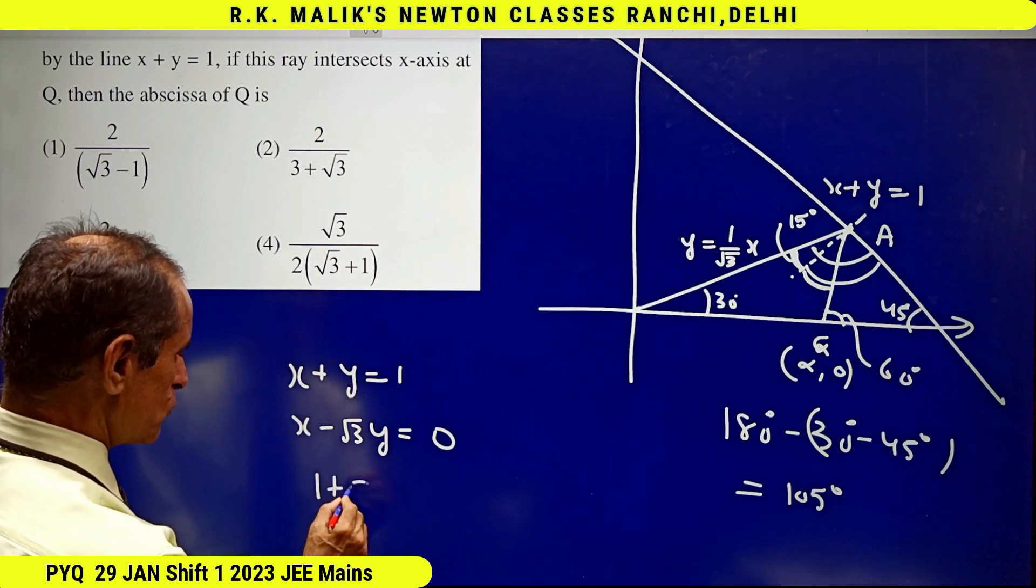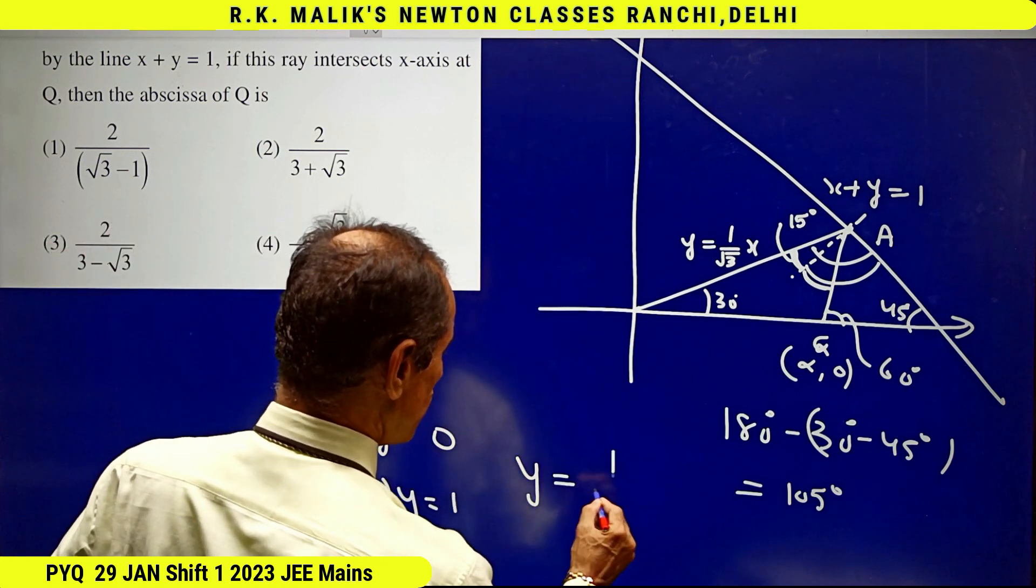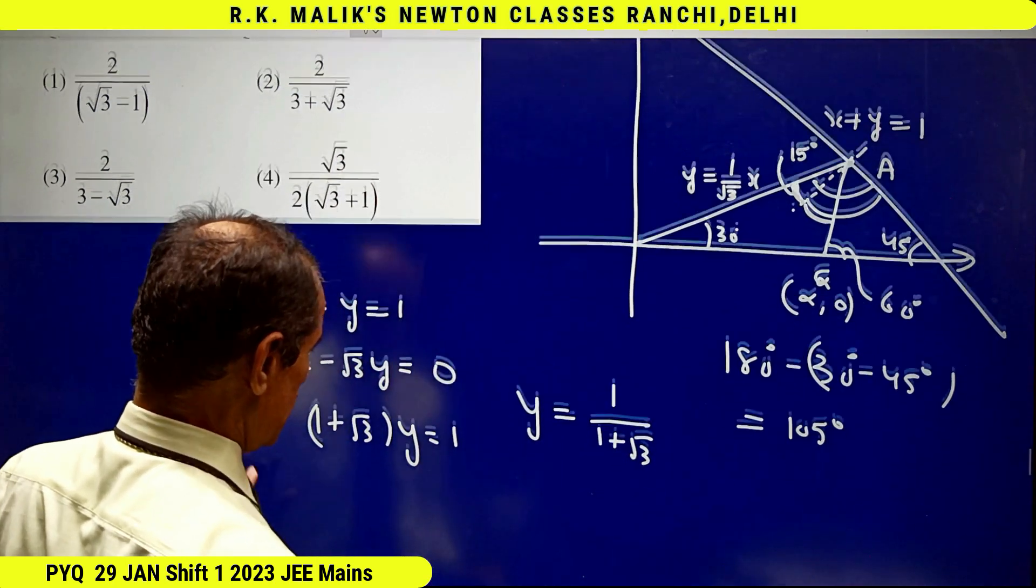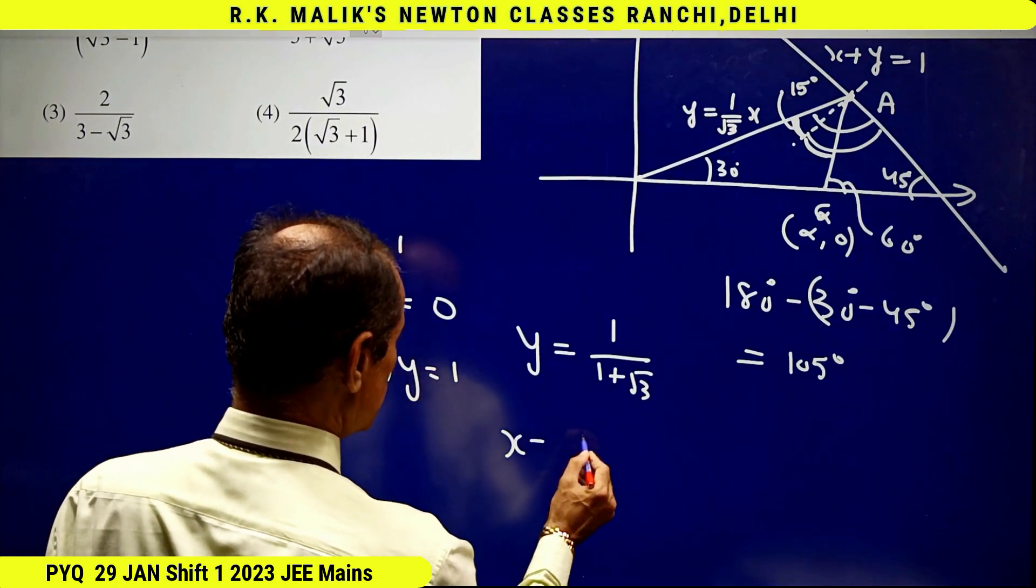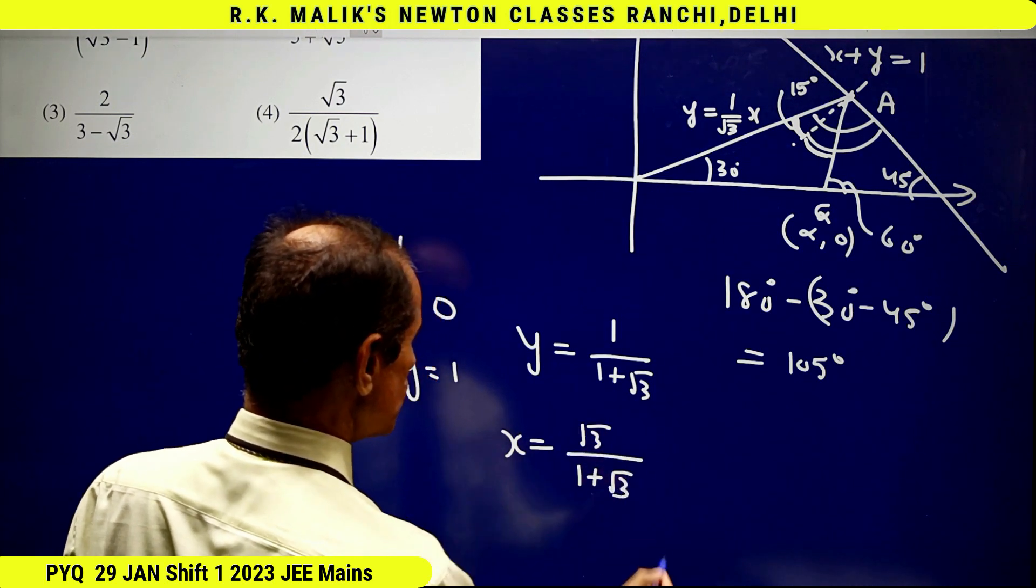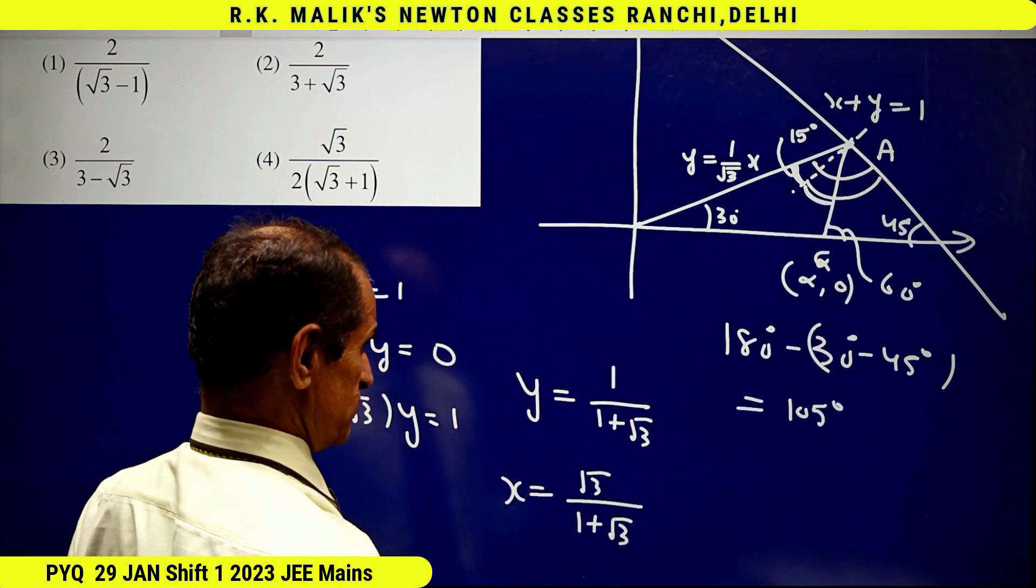That is, subtracting, I get (1 + √3)y = 1, so y = 1/(1 + √3). And therefore, x will become √3/(1 + √3). Hence, the coordinates of point A are √3/(1 + √3), 1/(1 + √3).